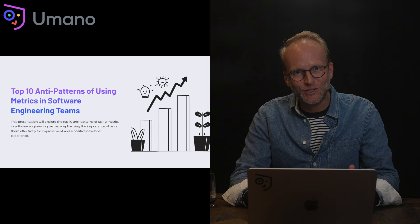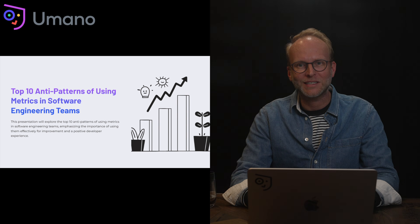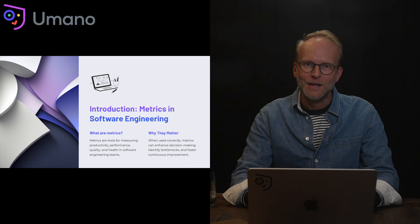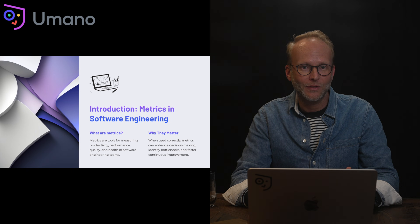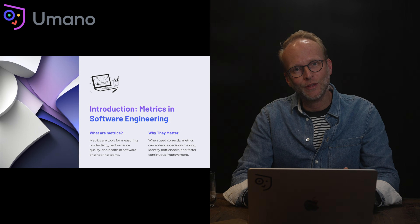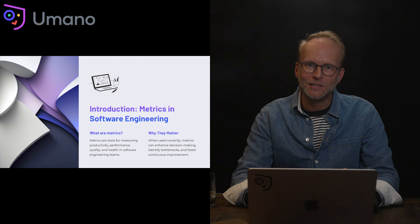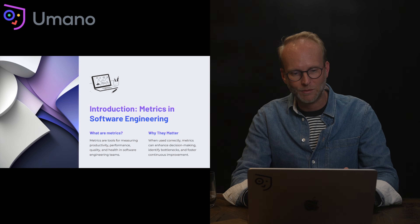Before we dive into what those anti-patterns are, let's take a quick recap on what metrics are and why they're important. Metrics are primarily the qualitative and quantitative signals of health. They give insight into the health of your team's productivity, their engagement, their experience, their efficiency, and their ability to deliver value according to plan.